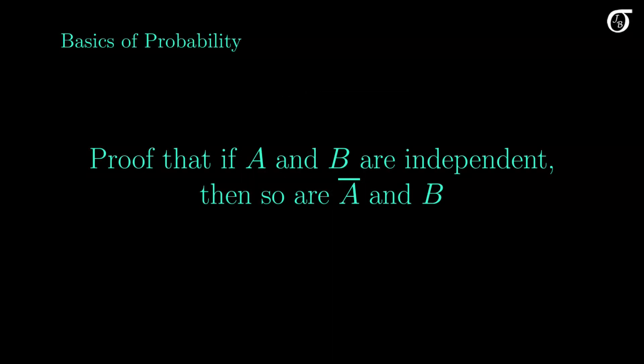Here I'm going to show that if events A and B are independent, then so are A complement and B, and so are A and B complement, since we can easily switch the roles of A and B.